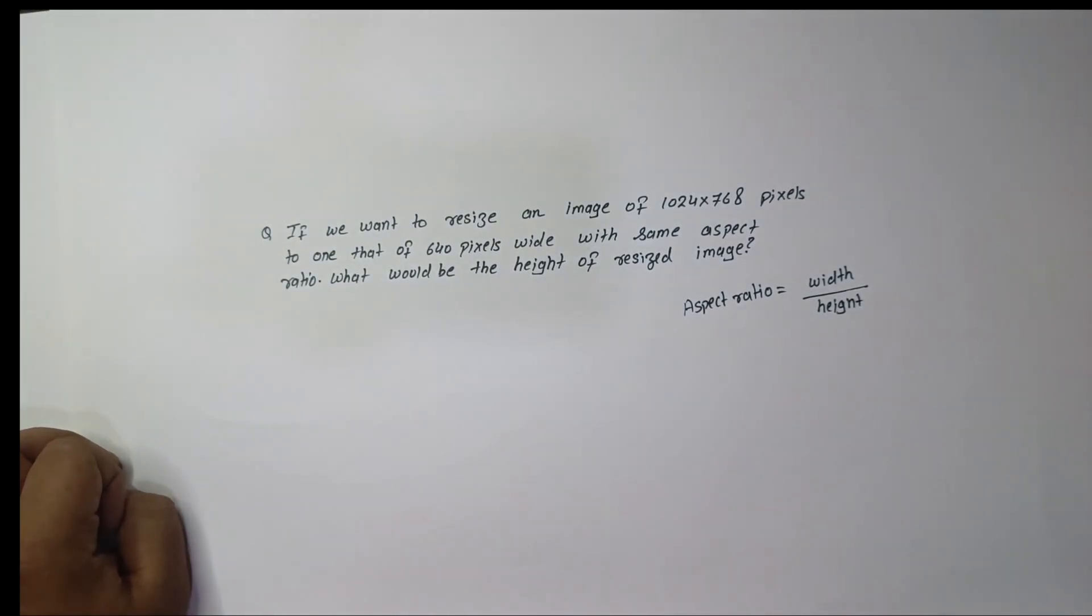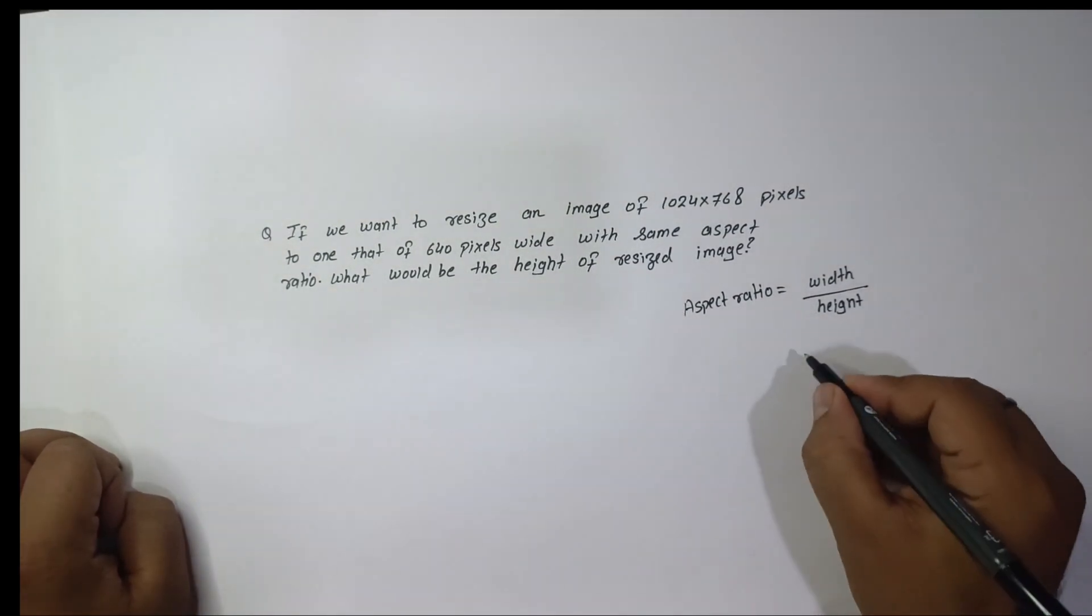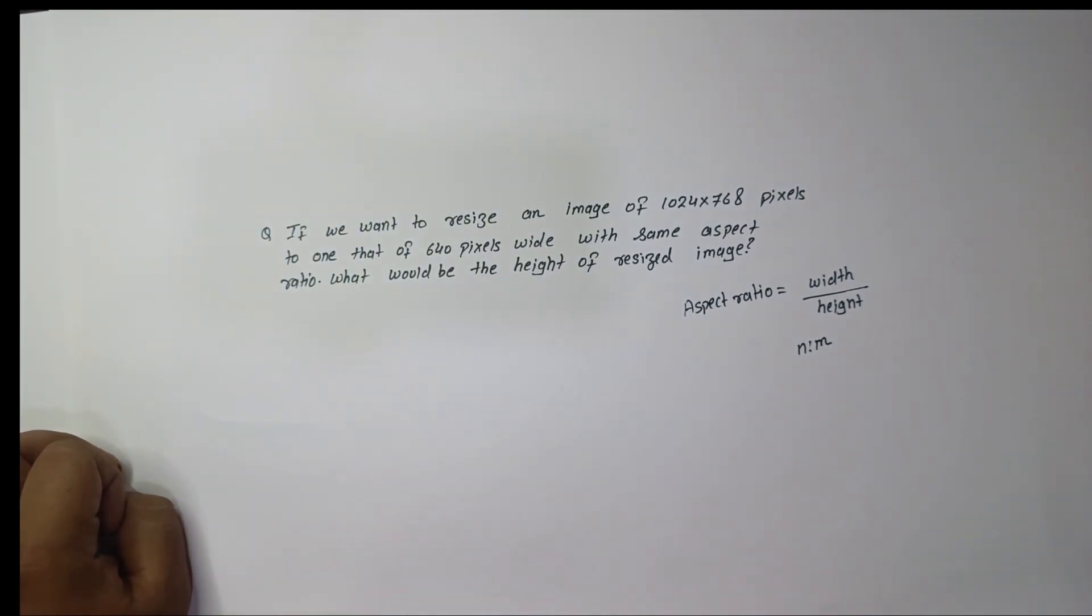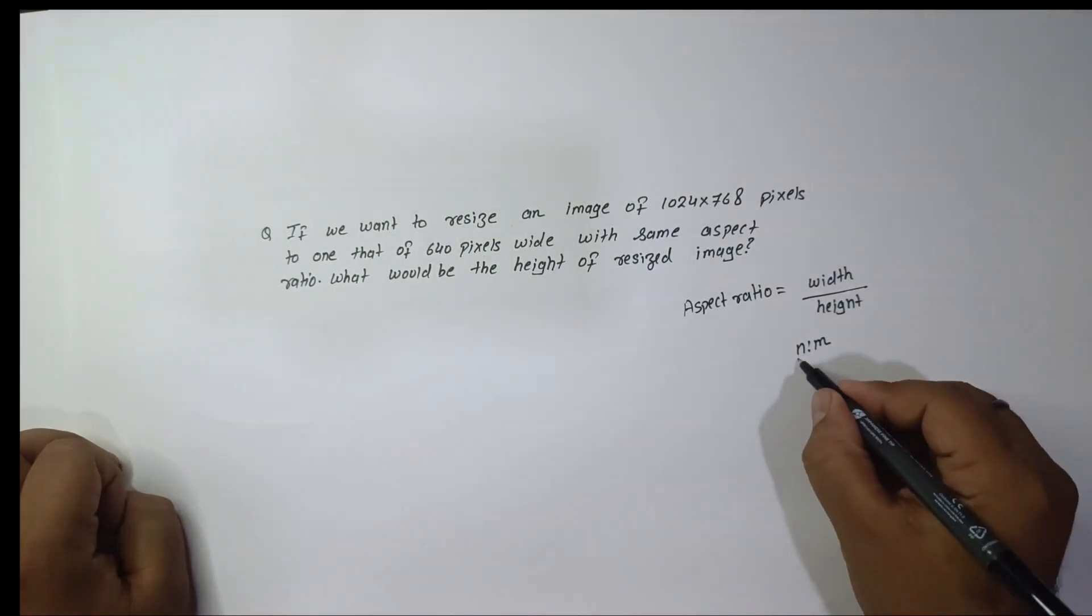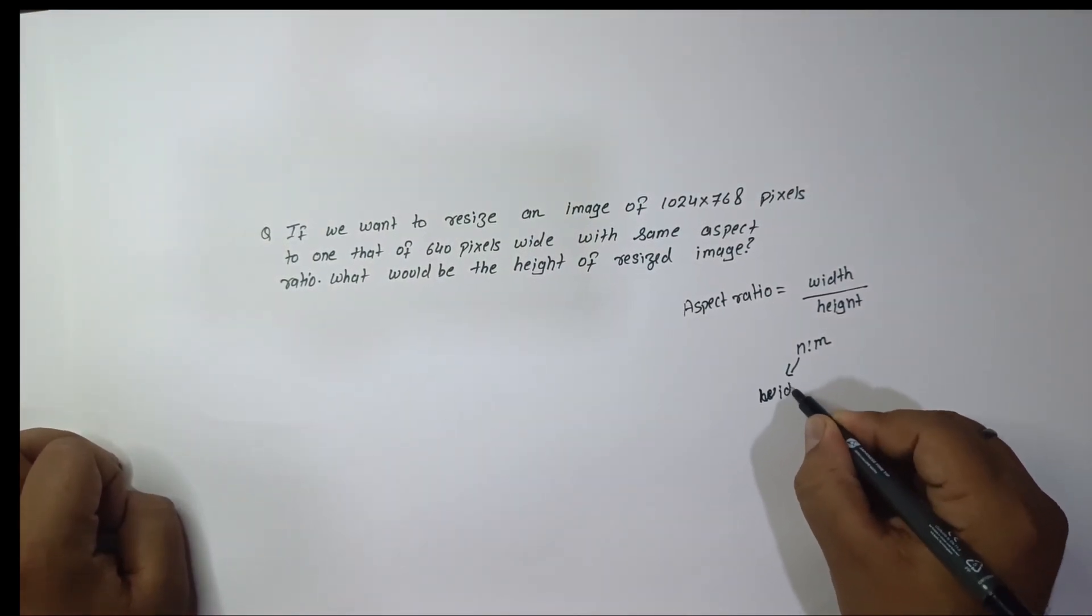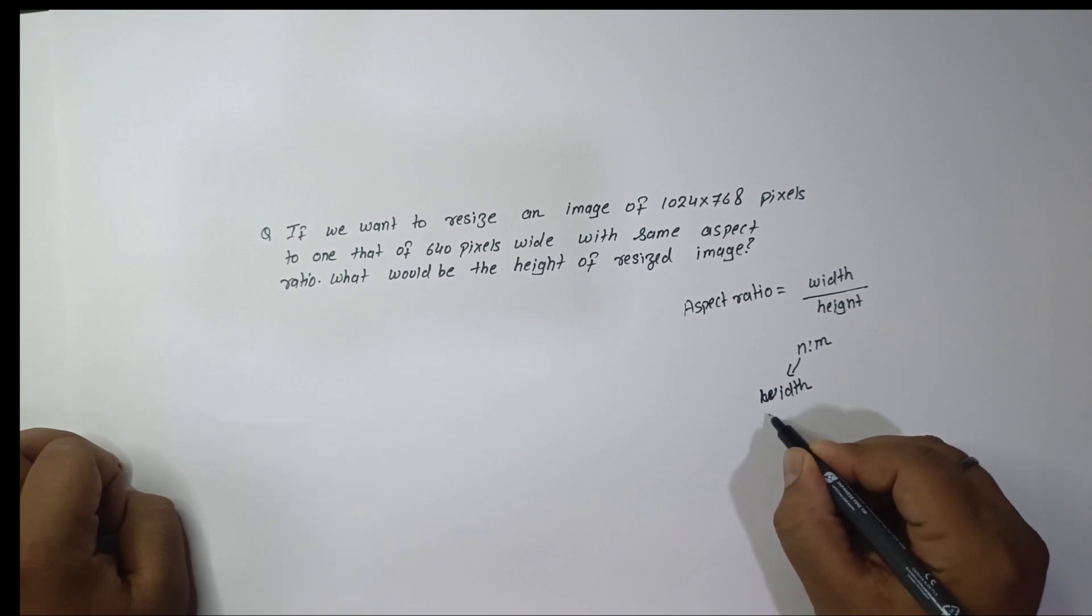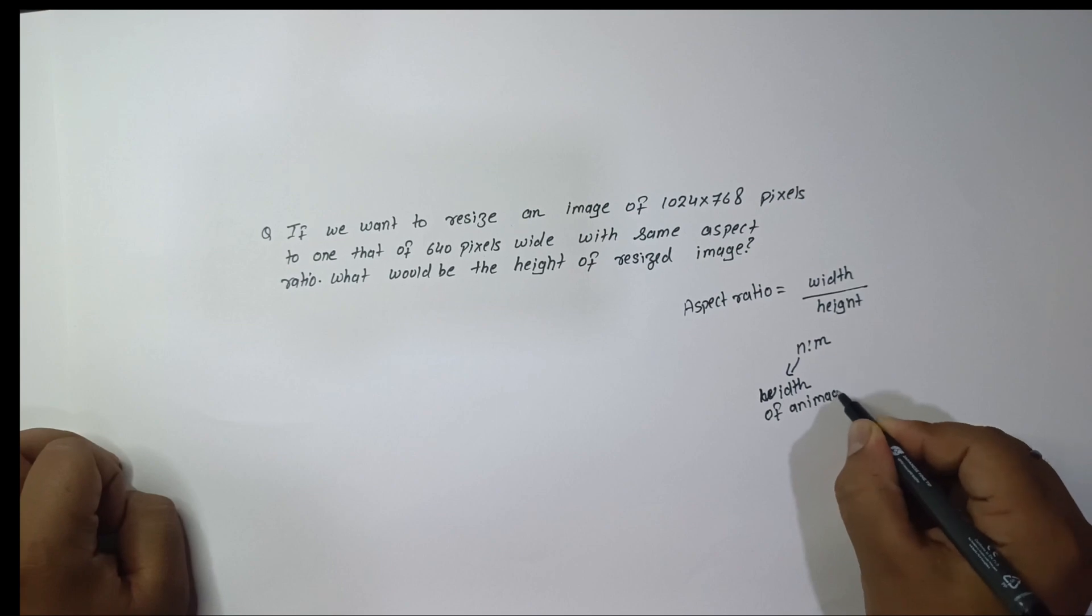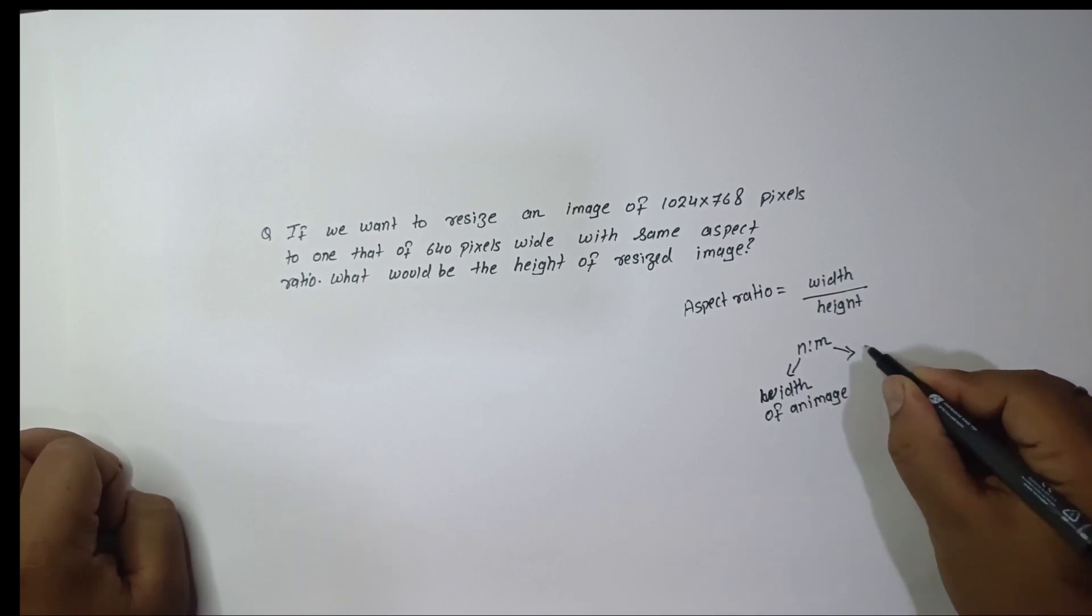Aspect ratio is always represented by two numbers separated by colon, so aspect ratio is always in the form of n colon m, where n represents the width of an image and m represents the height of an image.